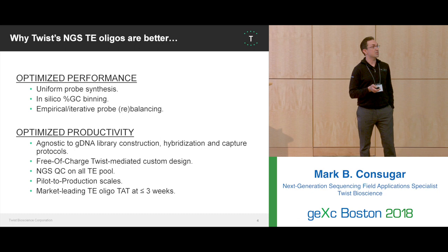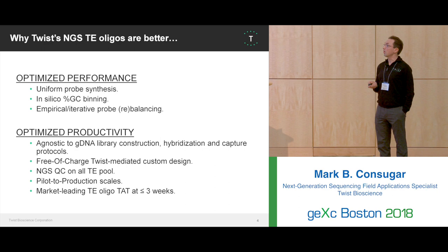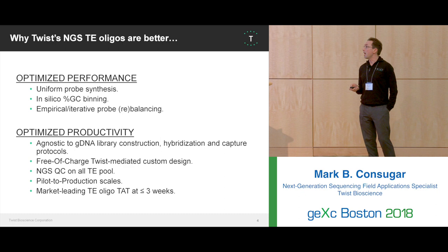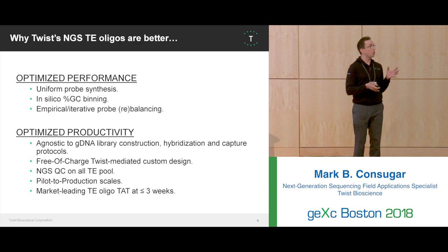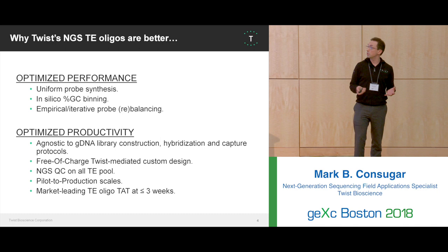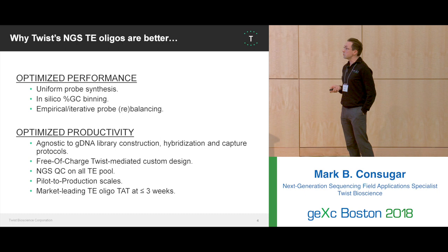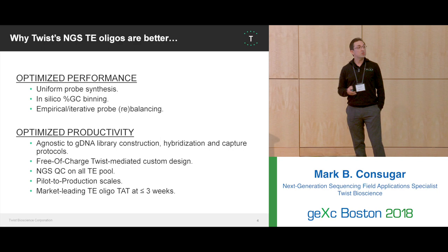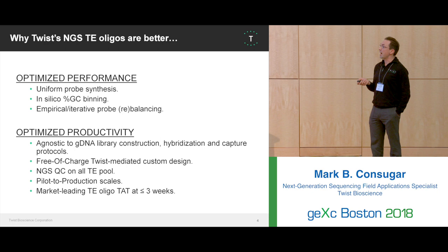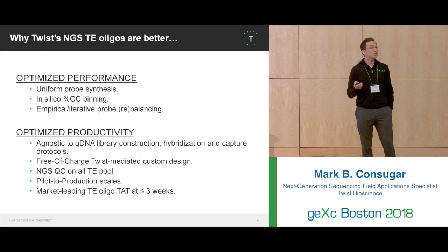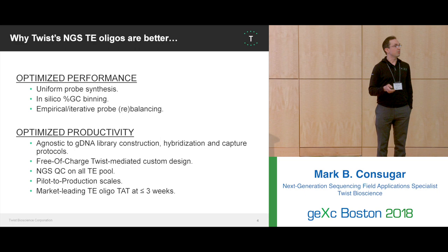That leads into optimized productivity. We're agnostic to all current library construction methodologies, but we also have our own. Consumers can choose homebrew, piecemeal our probes with others, or go all in with Twist. We offer free Twist-mediated custom design, usually taking 12 to 36 hours. We NGS-QC every target enrichment pool — so the pool you receive has been sequenced and we know the probe sequences and their ratios. We go from pilot to production scale, with no minimum or maximum, and our turnaround time is less than or equal to three weeks regardless of design size.